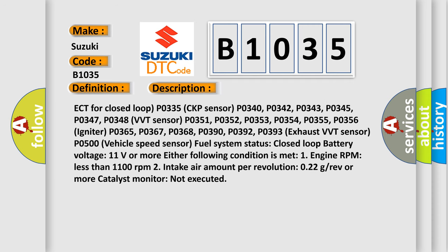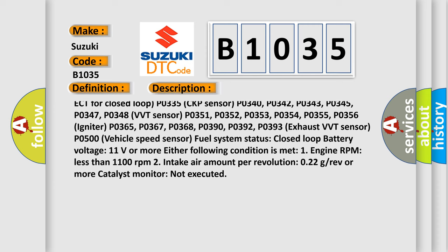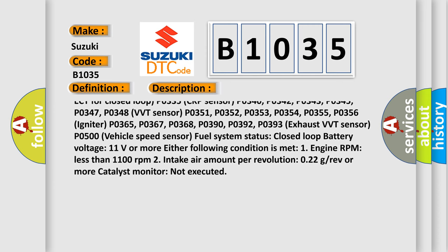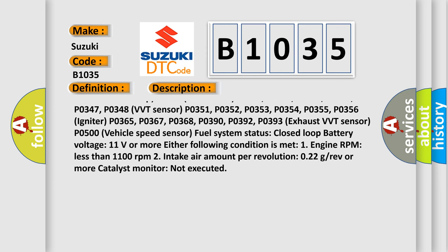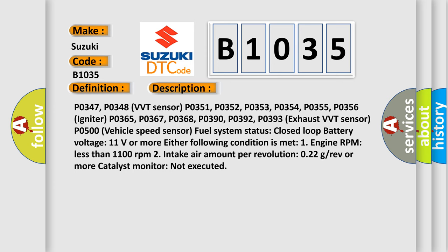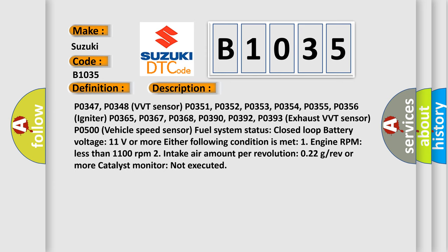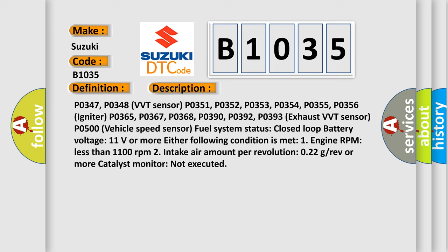Additional DTCs: P0365, P0367, P0368, P0390, P0392, P0393 exhaust VVT sensor; P0500 vehicle speed sensor. Fuel system status: closed loop. Battery voltage: 11 volts or more. Either of the following conditions is met: one, engine RPM less than 1100 revolutions per minute; two, intake air amount per revolution 0.22 g/rev or more. Catalyst monitor not executed.